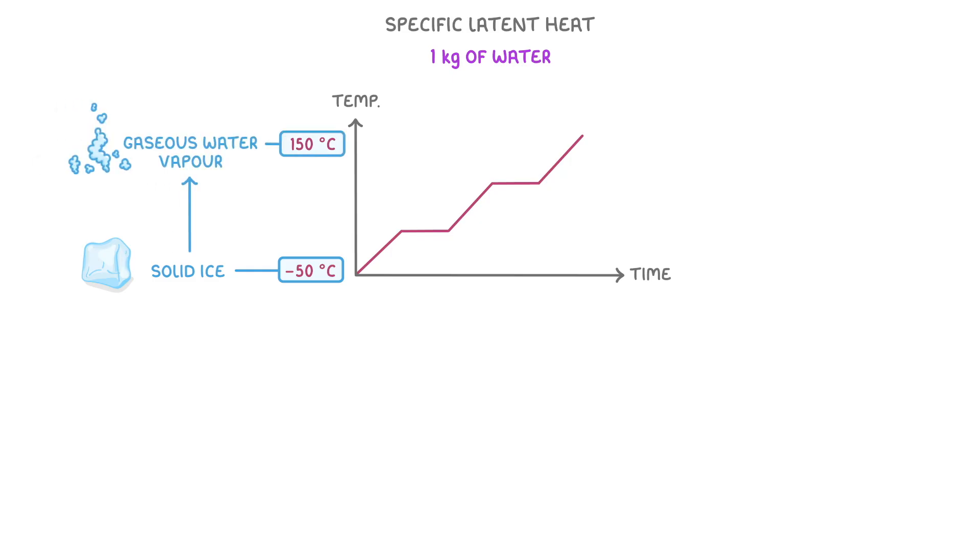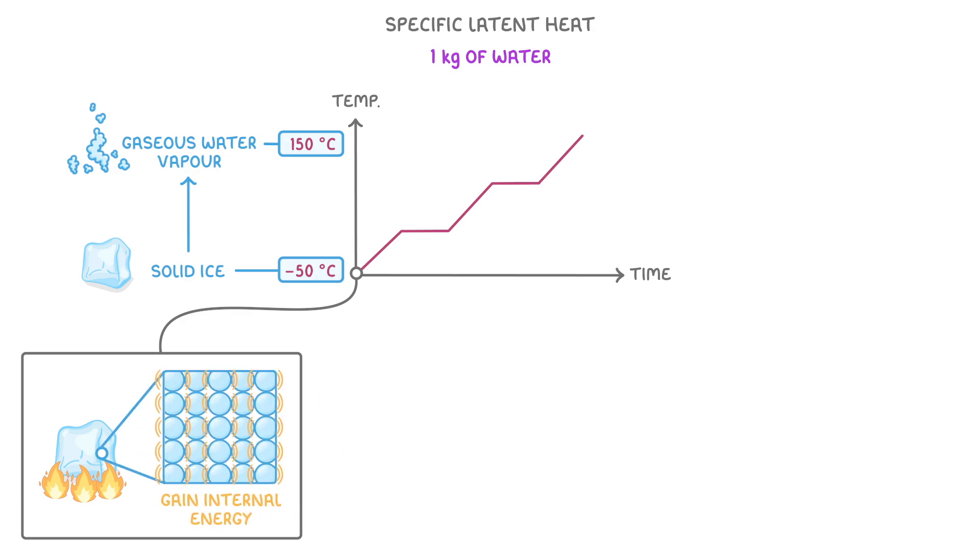To see how all of this works, let's imagine that we had one kilo of water, and that we heated it all the way from minus 50 degrees Celsius, where it was solid ice, to 150 degrees Celsius, where it was gaseous water vapor. As we heat our one kilo of ice, its particles all gain internal energy, and so its temperature increases.